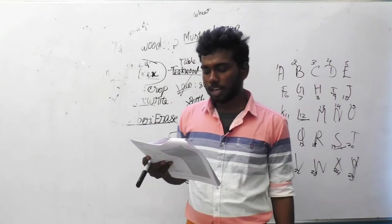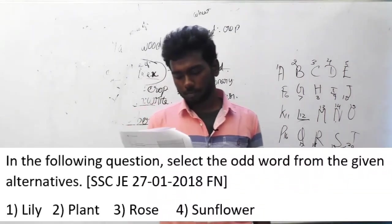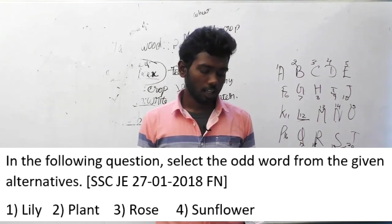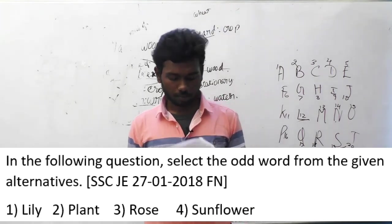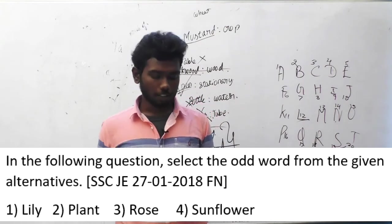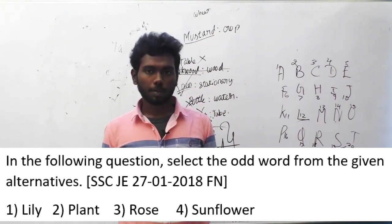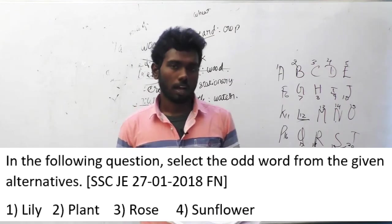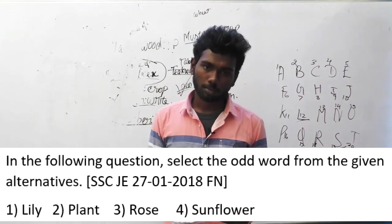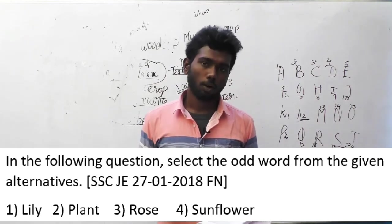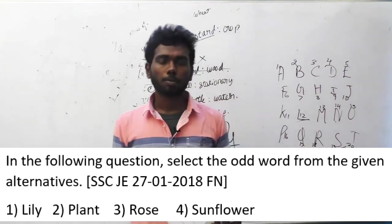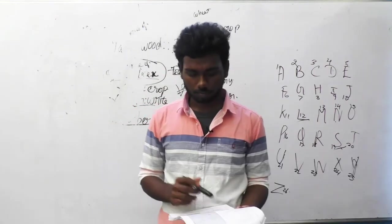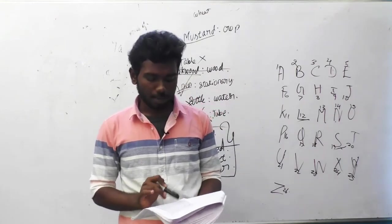Let us move on to question 149. In the following question, select the odd word from the given alternatives. This question is asked in SSC JE, 27th January 2018, forenoon session. Option A: lily, option B: plant, option C: rose, option D: sunflower. Except option B, all options are flowers. But option B alone is a plant. So that is the odd option. The answer for question 149 is option B, plant.